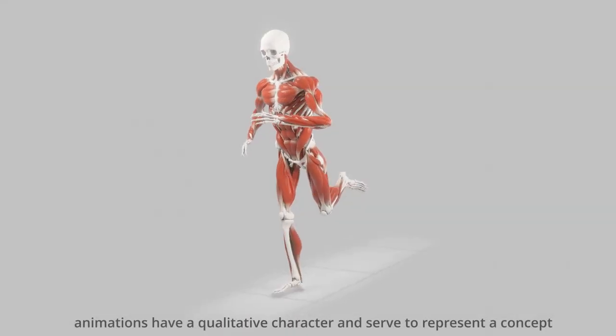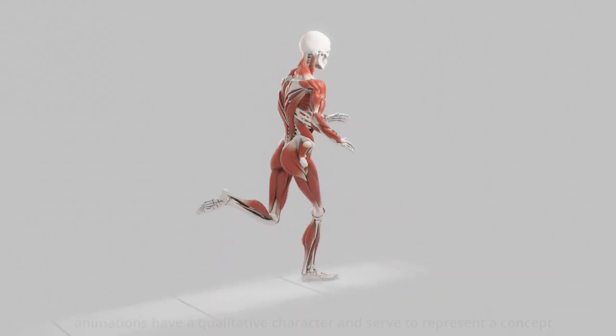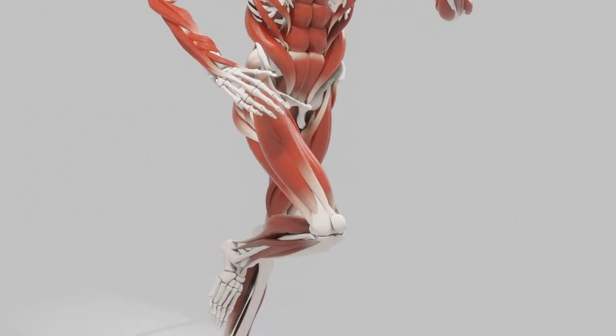Skeletal muscle tissue is the largest organ by mass in the human body, and it is crucial for locomotion, posture, respiration, physiology, and energy homeostasis.